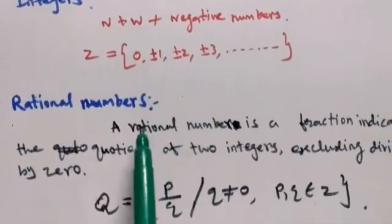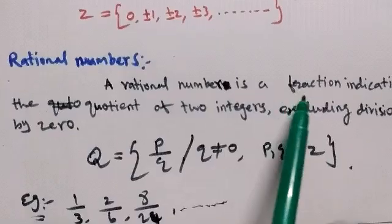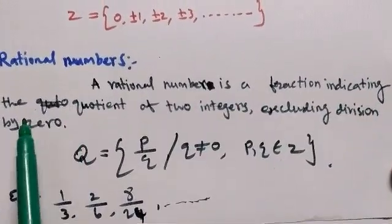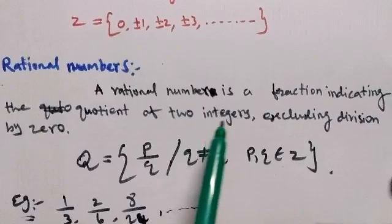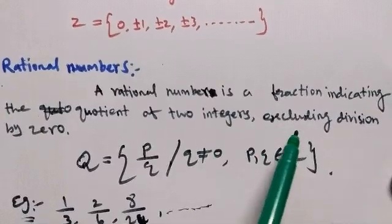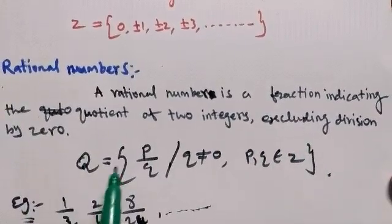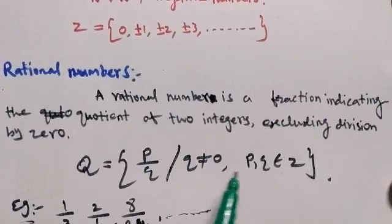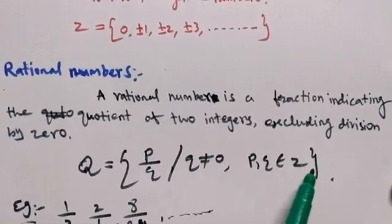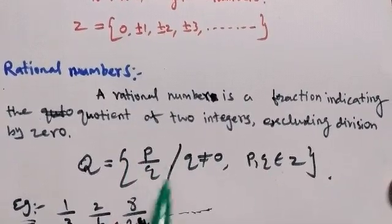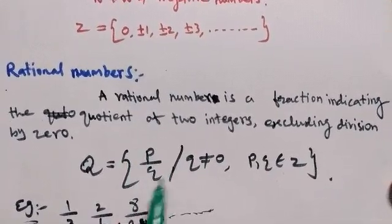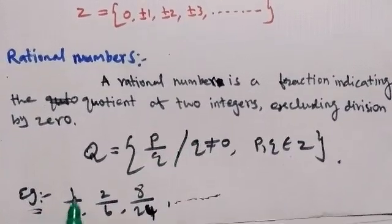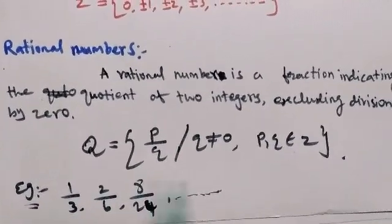Now the rational numbers. A rational number is a fraction indicating the quotient of two integers, excluding division by 0. The set Q equals the set of all fractions b by q, such that q is not equal to 0, where b and q belong to integers. For example, rational numbers include 1 by 3, 2 by 6, 8 by 24, etc.